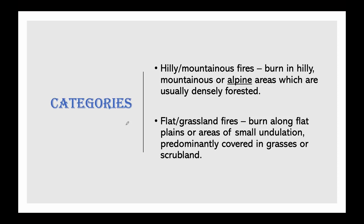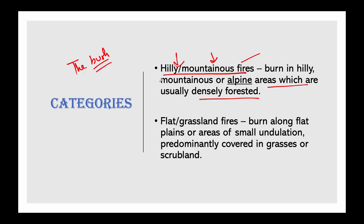There are certain categories of bushfires. The word 'bushfire' itself builds on the concept of the bush, as it spreads through bushes. One category is hilly or mountainous fires — they burn in hilly, mountainous, or alpine areas which are usually densely forested. This land is less accessible and not conducive to agriculture, so many densely forested areas have been saved from deforestation and are protected by national, state, and other parks. The steep terrain increases the speed and intensity of the firestorm, and where settlements are located in hilly areas, bushfires can pose a threat to both life and property.